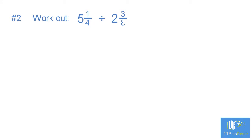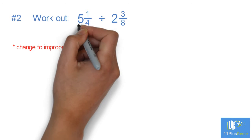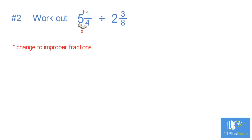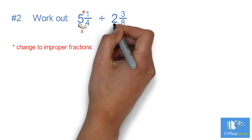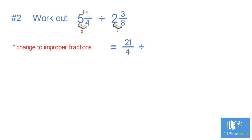Example 2. Work out 5 and a quarter divided by 2 and 3 eighths. Change to improper fractions: 4 times 5 add 1 equals 21 over 4. Divide by 8 times 2 add 3 equals 19 over 8. Keep, Change, Flip.